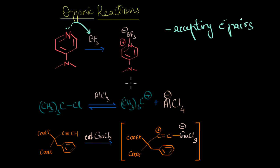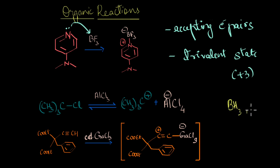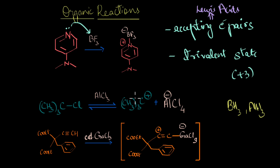What else is common between all of them? They are all in their trivalent state — that is, they are in their +3 oxidation state. One of the characteristic features of group 13 elements is that they all form electron-deficient compounds in their trivalent state. It's not just the halides; group 13 hydrides like BH3 and AlH3 are also electron-deficient in nature. In other words, they all act as Lewis acids.